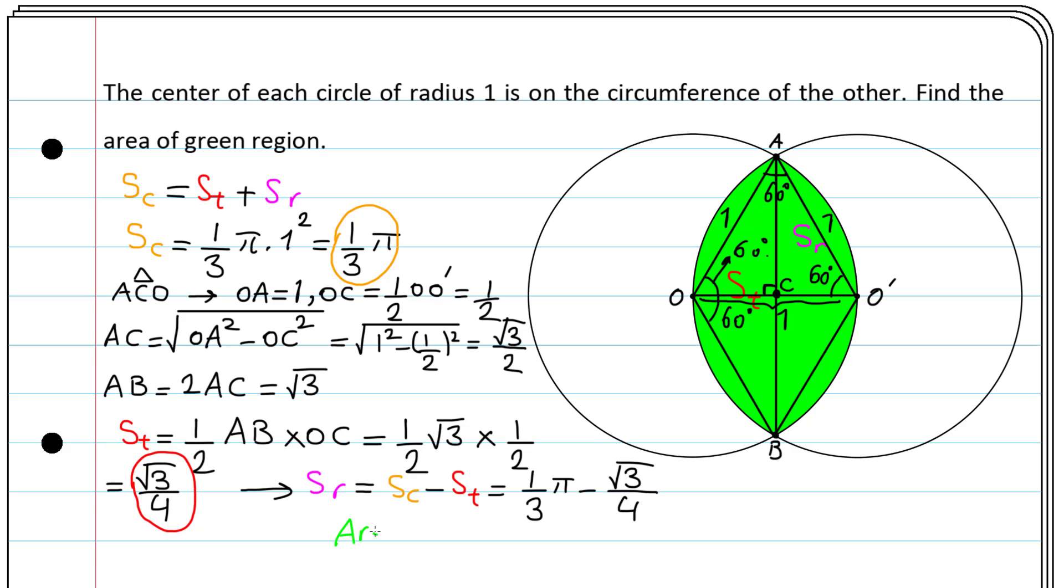So the green area is 2 times SR, which is 2 times one-third π minus square root of 3 divided by 4. And this gives two-thirds π minus square root of 3 divided by 2.